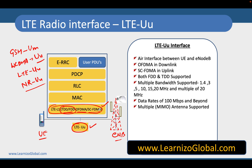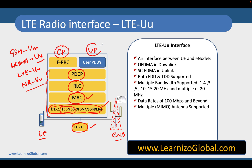On top of Layer 1, we have the MAC layer, which stands for Medium Access Control, then the RLC layer, which is Radio Link Control, and above that the PDCP layer. All these layers are common for both the control plane and the user plane.